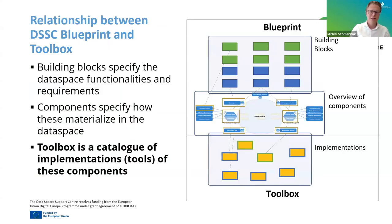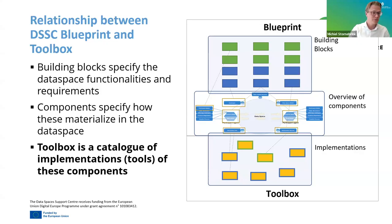Here, visually represented, is how we see these implementations in the toolbox link to the specifications provided by the blueprint. On the top layer you see the building blocks in our blueprint, then in the middle part — an integral part of the blueprint — is the overview of the components, those limited lists of essentials needed to set up a data space, and then a large toolbox with implementations that exist out there.